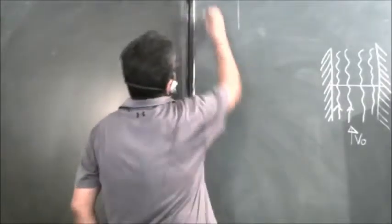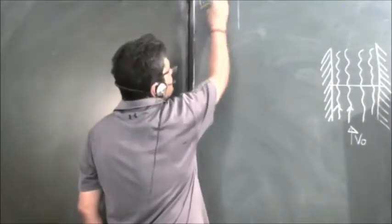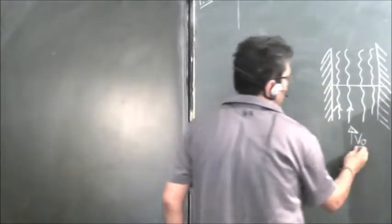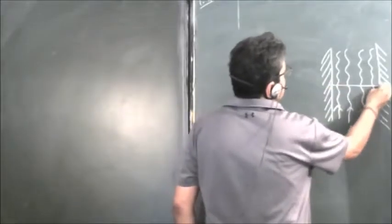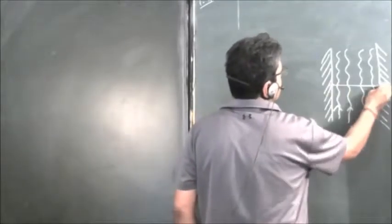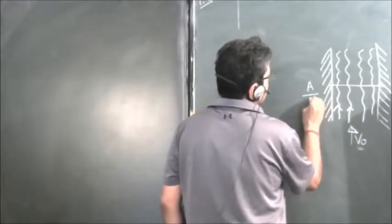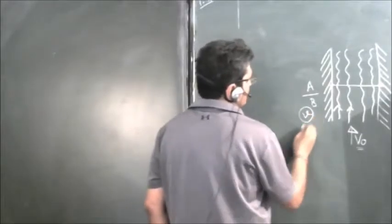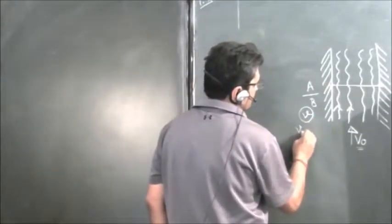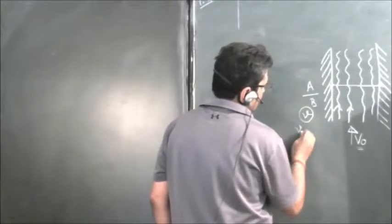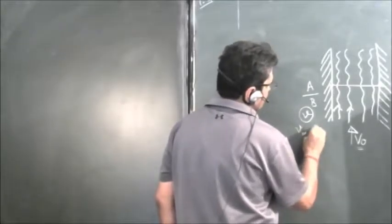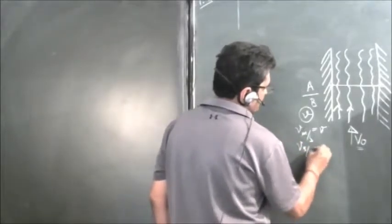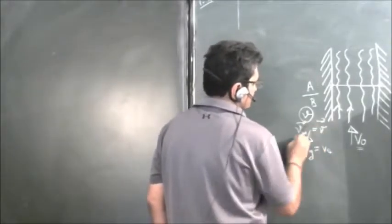We will solve a relative motion problem. We are given a stream flowing with velocity V₀. There are two shores and two swimmers A and B. Both can swim with velocity V with respect to the stream, and V stream with respect to ground is V₀. It is always advisable to write it this way.